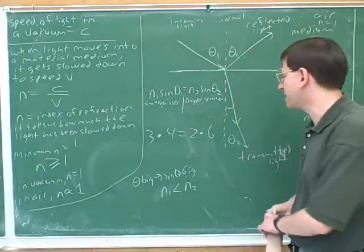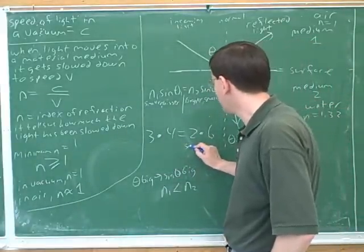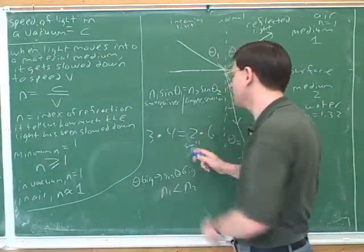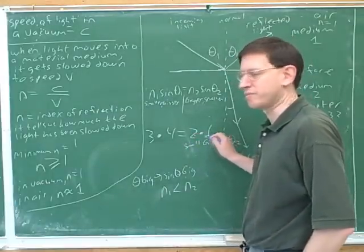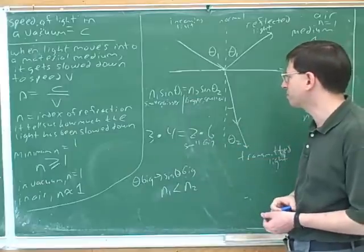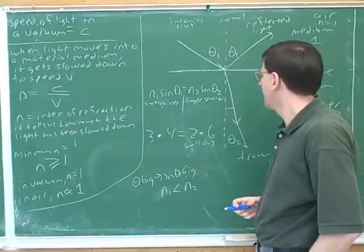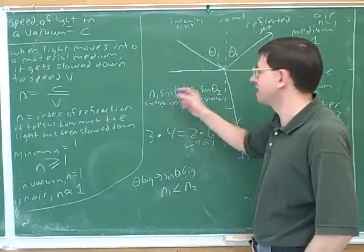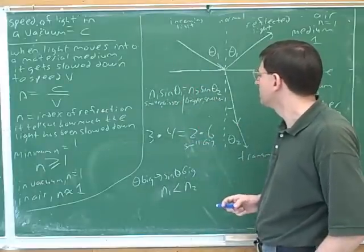3 times 4 equals 2 times 6. The only way we can have a small number over here, 2 is smaller than 3, the only way this can still be true is because 6 is a big number. 6 is bigger than 4 over here. So it's that same basic principle over here. So it's always important to be able to look at an equation and see, from the equation, what's the relationship between the variables.